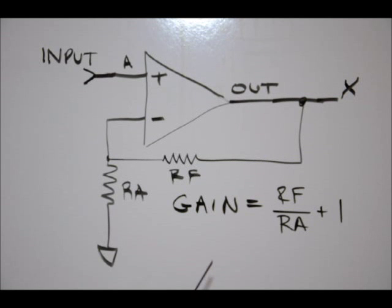Our gain is determined by this formula: RF, the value of RF over RA, plus 1.